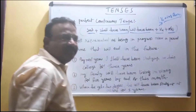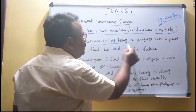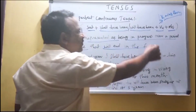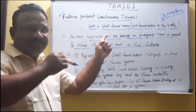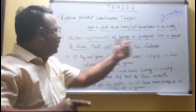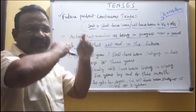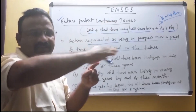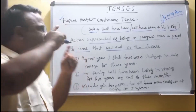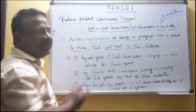The condition for using this tense is: an action is represented as being in progress over a period of time that will end in the future. The action is ongoing and progressive, and it will end at a future point. In that case, we use Future Perfect Continuous Tense.